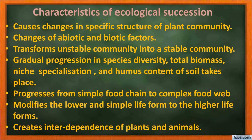The characteristic features of ecological succession: succession causes changes in the specific structure of the plant community. It also changes the abiotic as well as the biotic factors in that particular area. It transforms an unstable community into a stable community — sometimes plants are replaced by trees which become stable. There is gradual progression in species diversity, total biomass, and niche specialization — whichever organism is comfortable in that area will occupy and survive there.